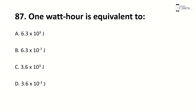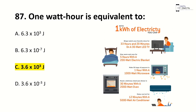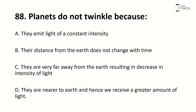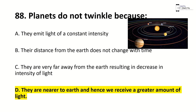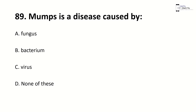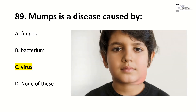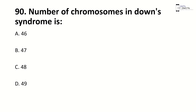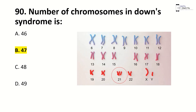Planets don't twinkle because they are near to the earth and hence we receive a greater amount of light. Mumps is a disease caused by a virus. Number of chromosomes in Down syndrome is — right answer is B, 47.